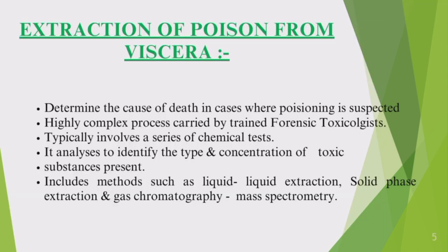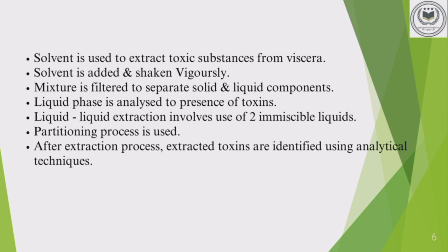Now let's quickly discuss the extraction of poisons from common viscera. It typically involves the use of many chemical tests and analyses to identify the type and concentration of toxic substances present. It eventually helps determine the cause of death in cases where poisoning is suspected. It is a highly complex process that includes methods such as liquid-liquid extraction, liquid phase extraction, and gas chromatography, also known as mass spectrometry.